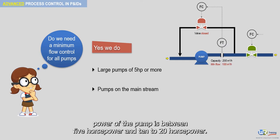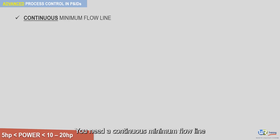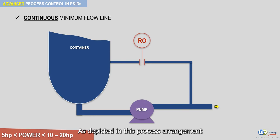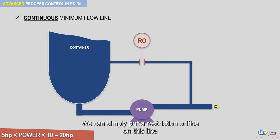When the power of the pump is between 5 horsepower and 10 to 20 horsepower, you need a continuous minimum flow line. As depicted in this process arrangement, instead of going to the expense of installing a control valve, we can simply put a restriction orifice on this line.